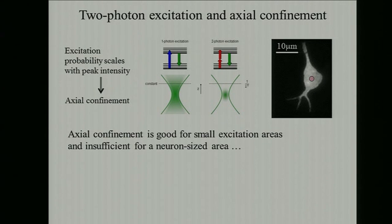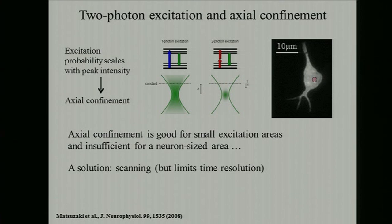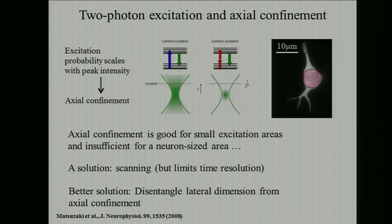Axial confinement is very good for small excitation areas, but if you consider a Gaussian light beam, the degree of axial confinement is actually proportional to the excitation area. So if you want to excite the full area of a neuron, you're going to have too low axial resolution. One solution is to scan a small spot on the neuron, but this limits your time resolution.